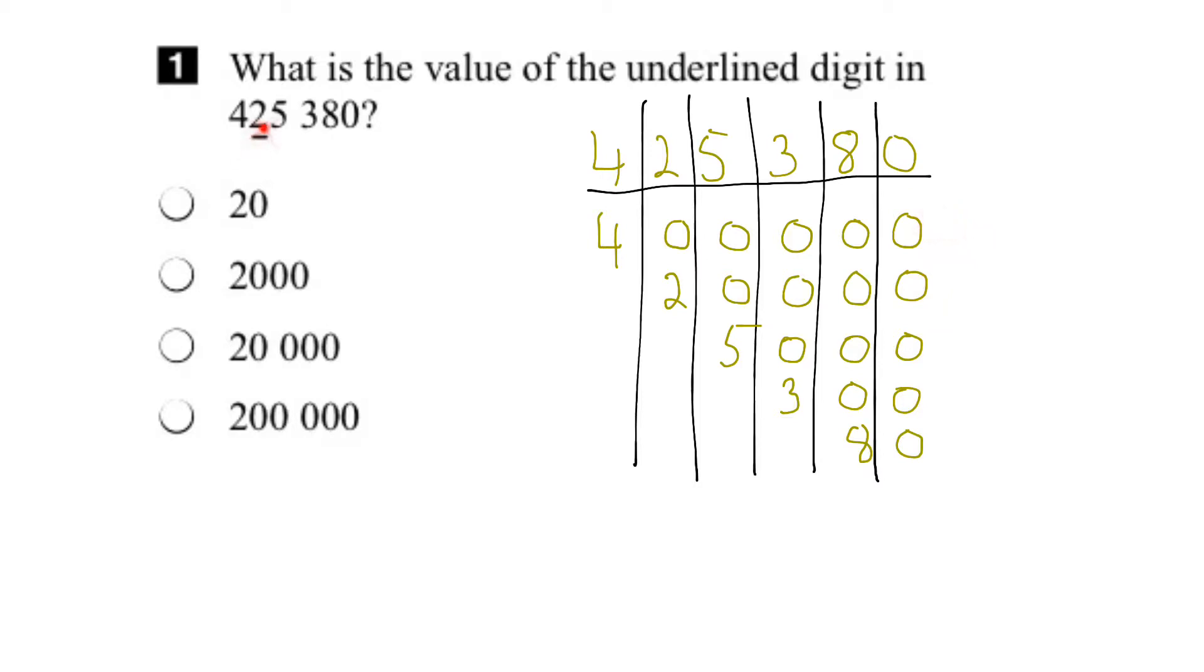So the value of the 2 would be right here. In other words, a 2 followed by 1, 2, 3, 4 zeros, or 20,000. So our answer would be right here. And there you go.